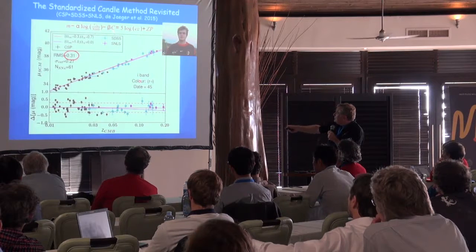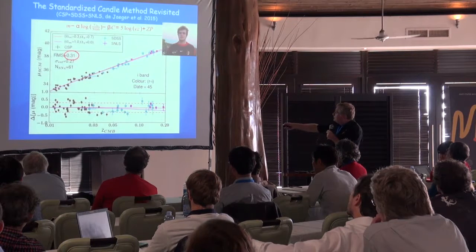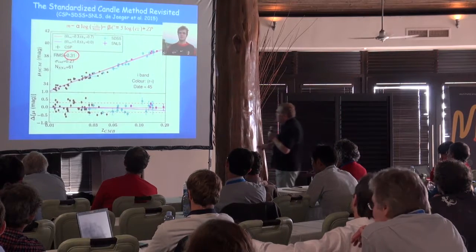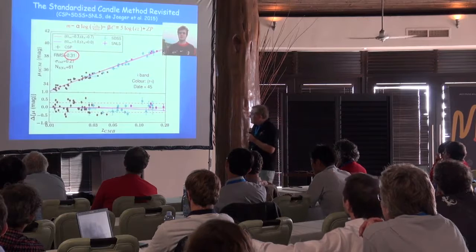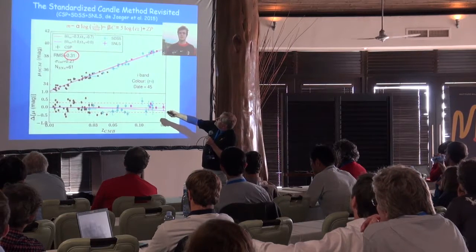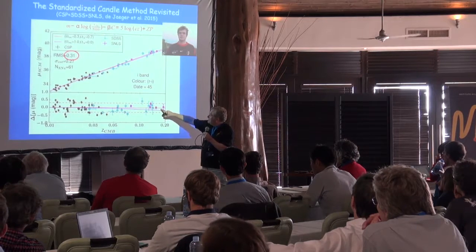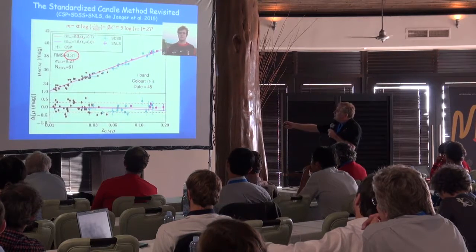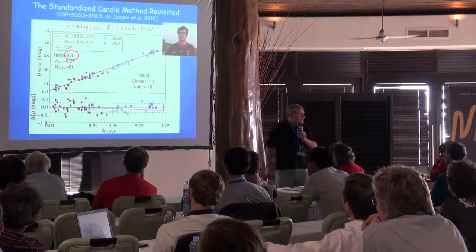Again, a Hubble diagram quite good in terms of dispersion with 61 supernovae. You can see two models shown here. In magenta is the Einstein-de Sitter model — omega matter equals one, lambda zero. In red is the standard model today with omega matter of 0.3 and omega lambda of 0.7. The data seem to prefer the accelerating model with a non-zero lambda.